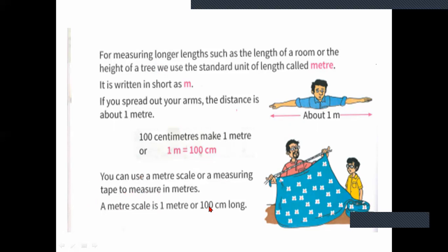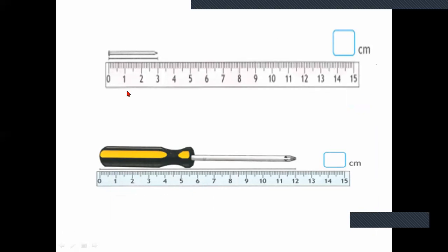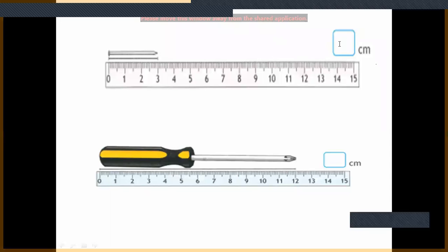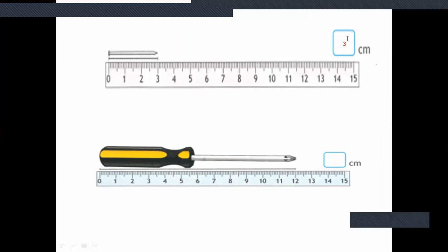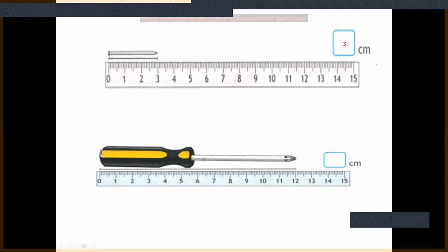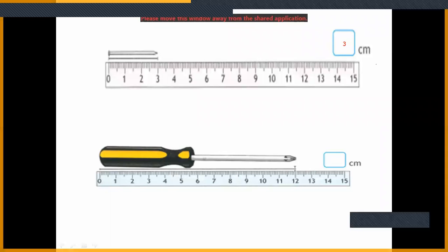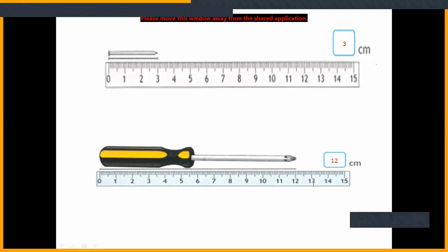We will do some example sums now. See here — this nail. They have placed it at 0 on the ruler. Where is it ending? It ends at 3, so we write it as 3 centimeters. Next, a screwdriver — starting from 0, it ends at 12, so it is 12 centimeters. This is how you measure with a scale.